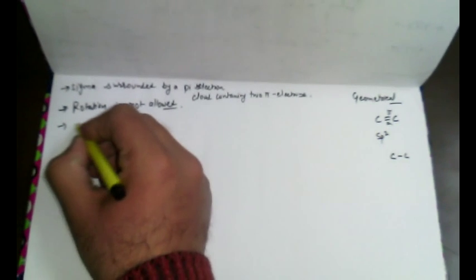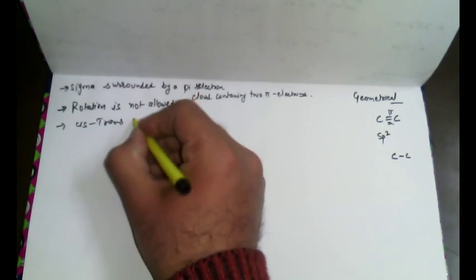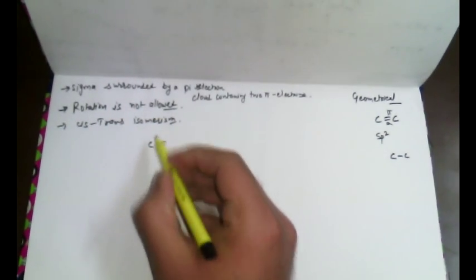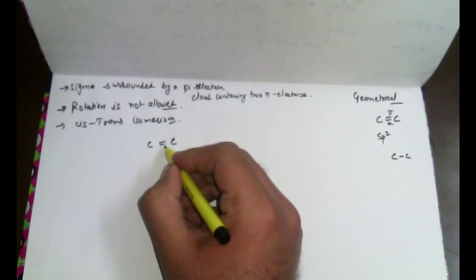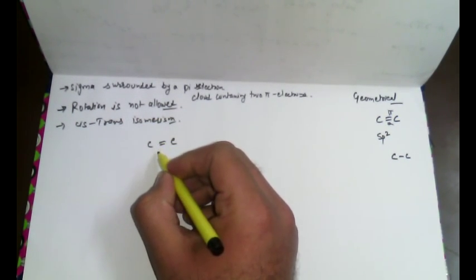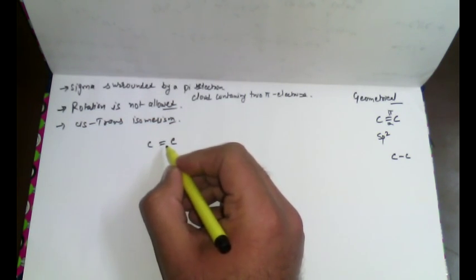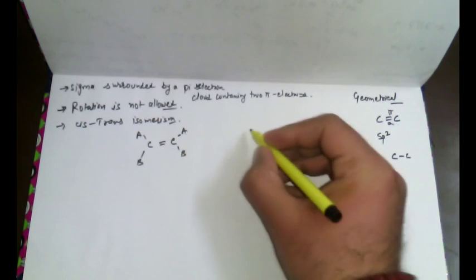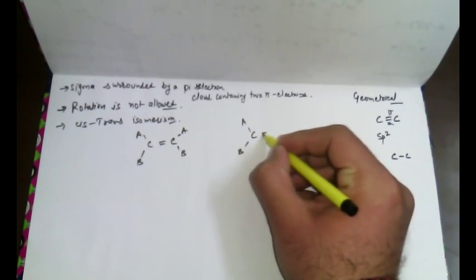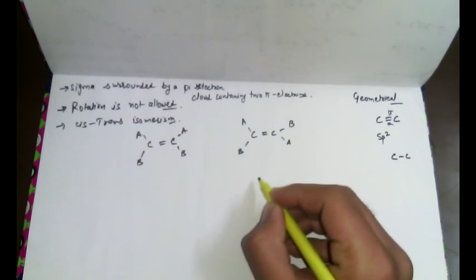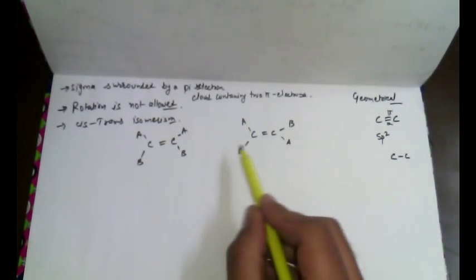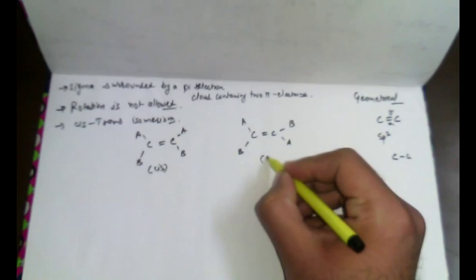Geometrical isomers are also known as cis-trans isomers. The two carbon atoms must have a double bond. These are the two types of geometrical isomers: the first one is known as cis and the second one is trans. Both are prepared because they have different melting points and boiling points.